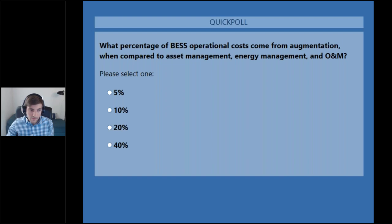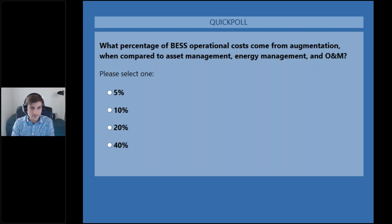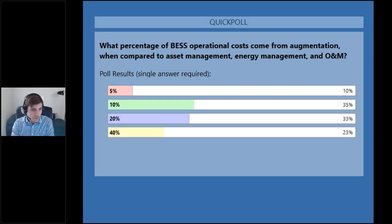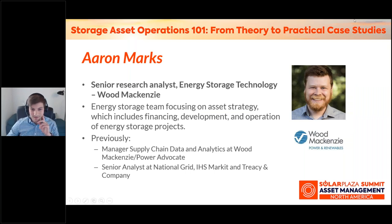Let's go to the second poll question — it's actually a quiz, though there are no repercussions for getting any answers wrong. The question is: what percentage of storage operational costs come from augmentation when compared to other categories including asset management, energy management, and O&M? Is it 5%, 10%, 20%, or 40%? We're about evenly split between 10% and 20%, with distant responses at 5% and 40%. I'm actually not going to tell you the answer — Aaron will. Aaron is the Senior Research Analyst for Energy Storage Technology at Wood Mackenzie, providing an overview of storage operational theory informed by real-world input.